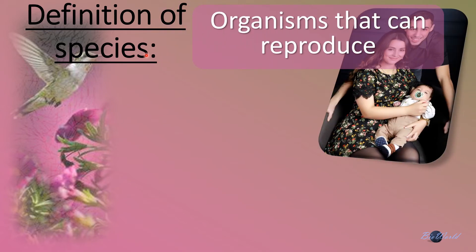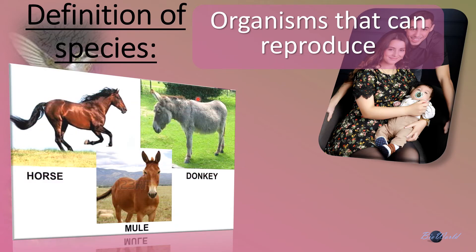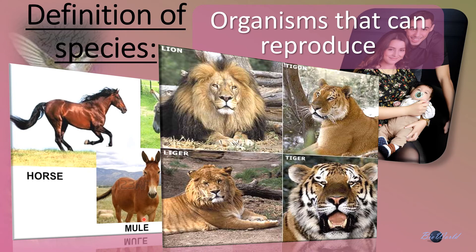How about defining species as organisms that can reproduce? Even this definition is not accurate, because we have instances where organisms of two different species — like the horse and the donkey — can reproduce an offspring called the mule. Or, in the case of a crossbreed between a lion and a tiger, it produces babies called either a tigon or a liger.